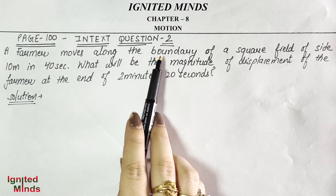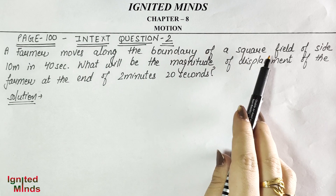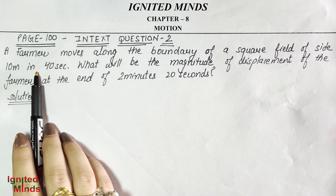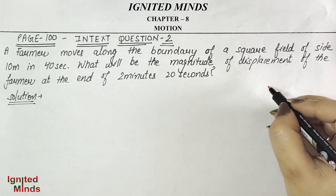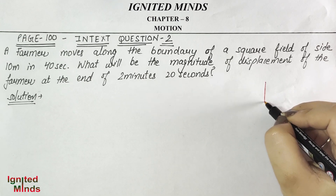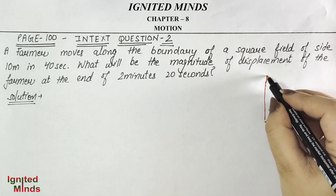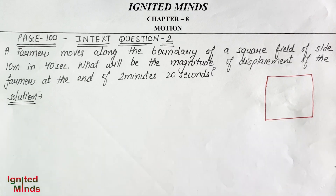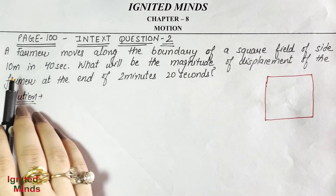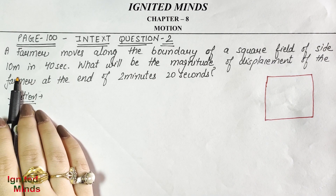A farmer moves along the boundary of a square field of side 10 meters in 40 seconds. First, let's draw a figure here. The field is a square with side 10 meters. If we label the corners A, B, C, D, then every side is 10 meters.